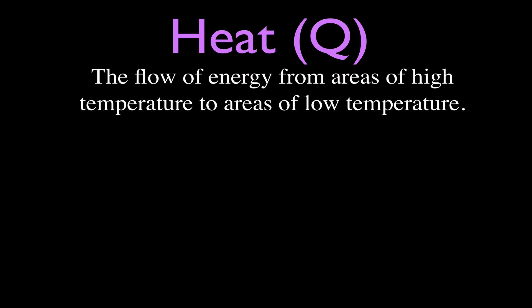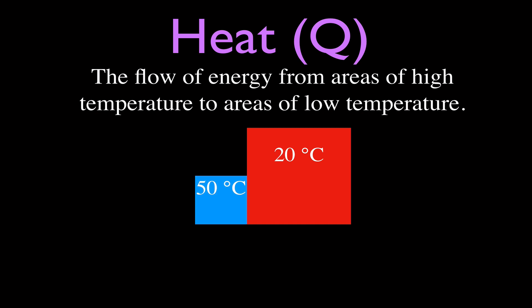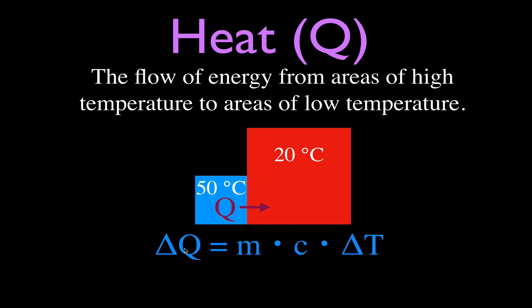Heat has the symbol Q, and heat is the flow of energy from an area of high temperature to an area of low temperature. So if you have two objects in contact — one at 50 degrees Celsius and one at 20 degrees Celsius — heat flows from the 50-degree object into the 20-degree object, even though the 20-degree object is bigger. The amount of heat that flows is delta Q, equal to mass times specific heat times the change in temperature.